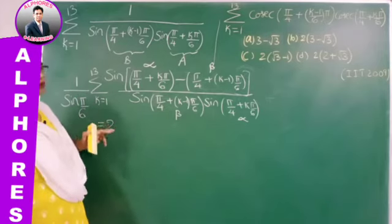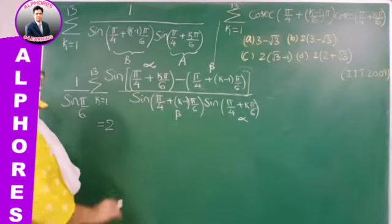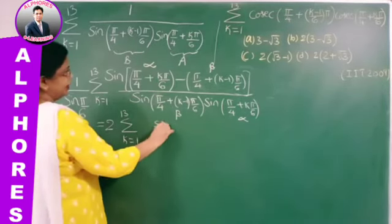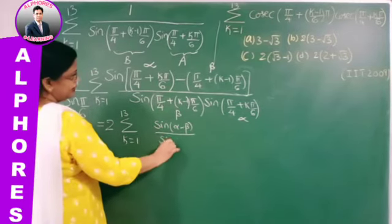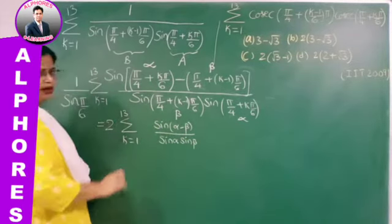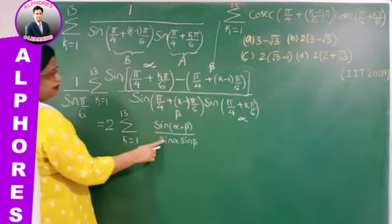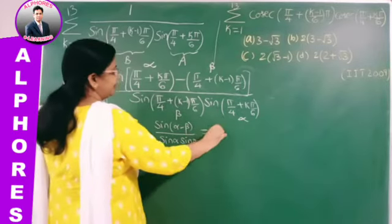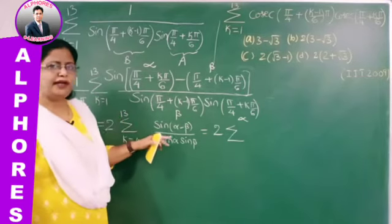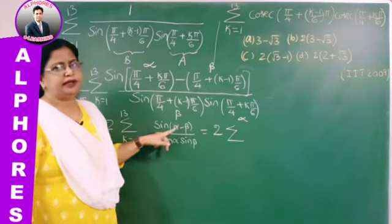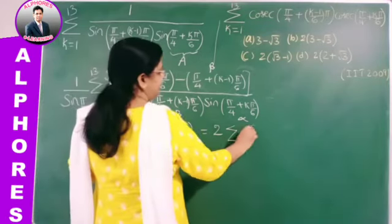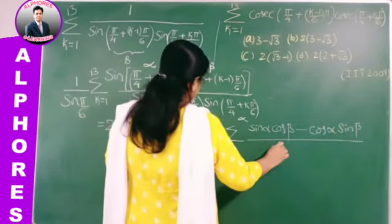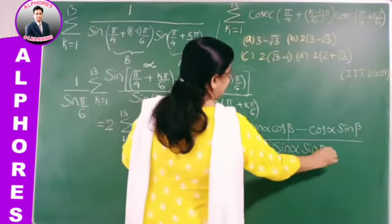So the expression becomes 2 times sigma of [cot(beta) − cot(alpha)], which is exactly the difference form we need. Substituting back: this is 2·sigma[cot(π/4 + (K−1)π/6) − cot(π/4 + Kπ/6)]. Note: since sigma applies to both terms, bracket them properly as sigma[a − b], not sigma(a) − b.